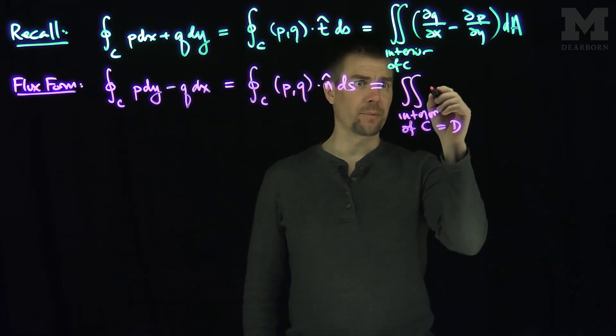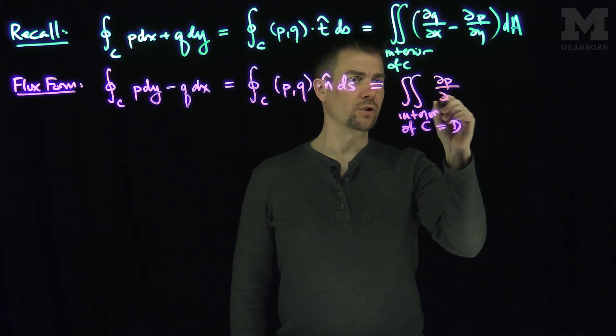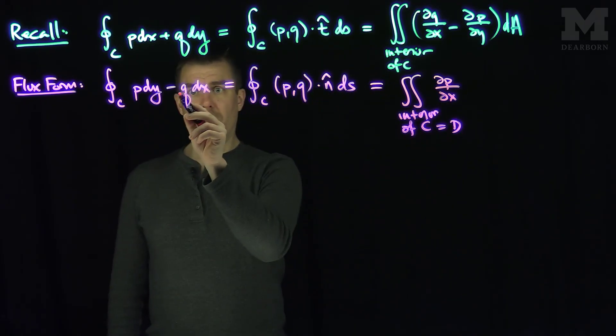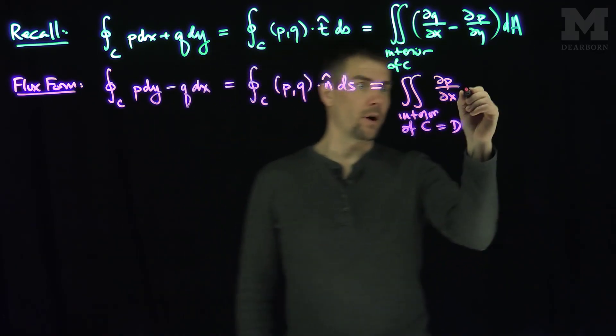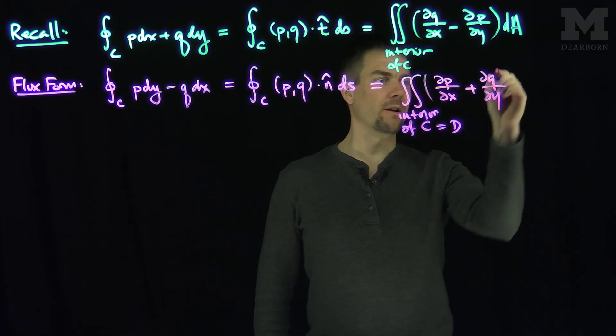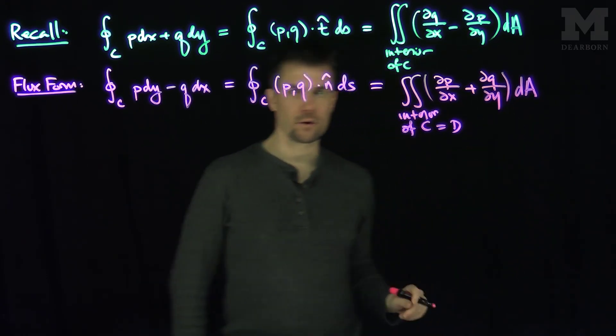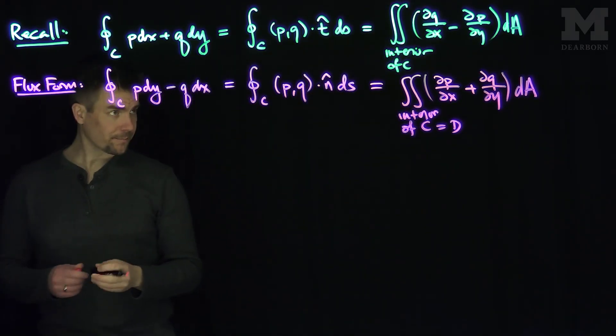So I'm gonna have an x derivative of p, so I'm gonna have partial p partial x. And then the negative y derivative of negative q, so it's gonna be plus partial q partial y. And we see that's exactly the divergence of that vector field over there. So that's the first thing we're gonna need over here.